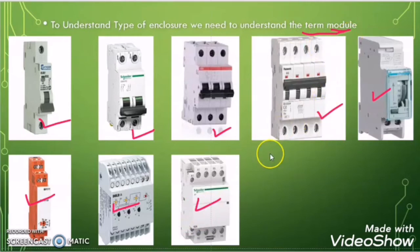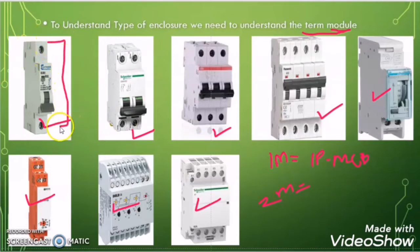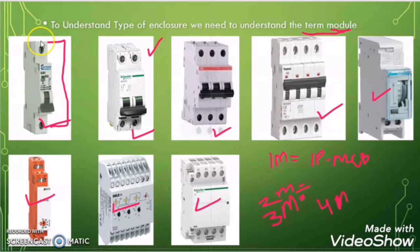We have to understand what the module represents. One module represents that there is a space to install one single pole MCB. Two modules represent space for two single pole MCBs or one double pole MCB. Three modules represent space for three single pole MCBs or one three pole MCB. Four modules represent space for four single pole MCBs or one four pole MCB.